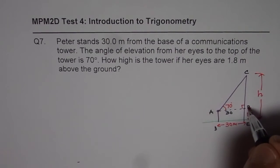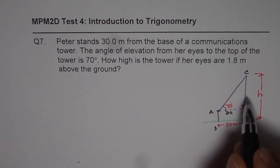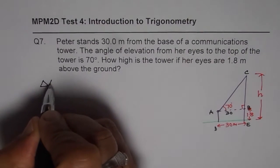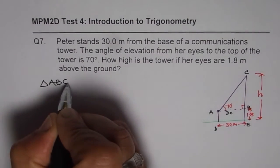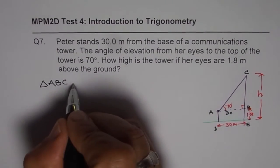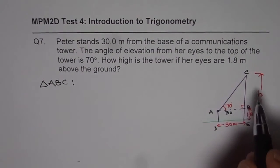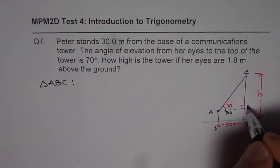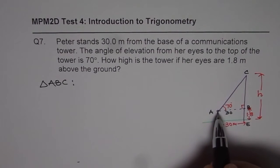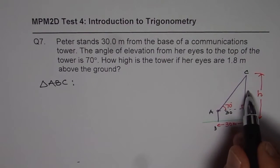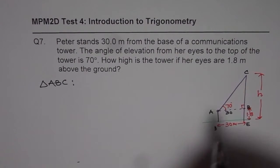We can find CB from the triangle ABC. So let us solve the triangle ABC, which is a right triangle. Now in this triangle, we know angle 70 degrees. We need to find the opposite side CB and we know AB. Since we know adjacent side and we need to find opposite side, we can use tan.